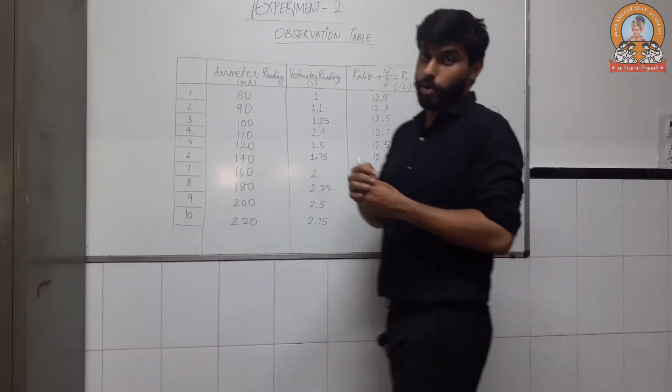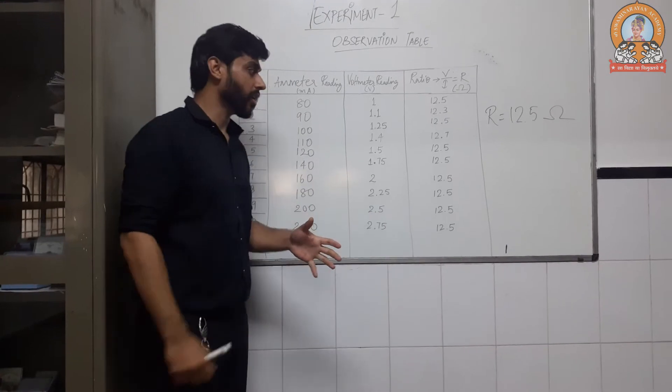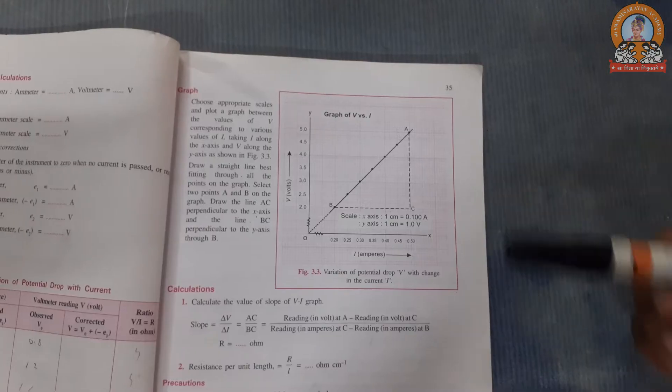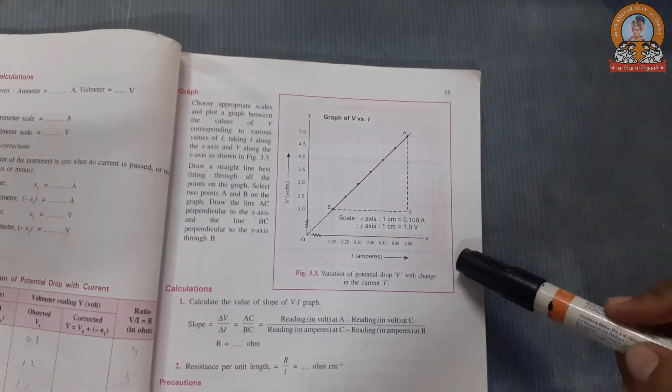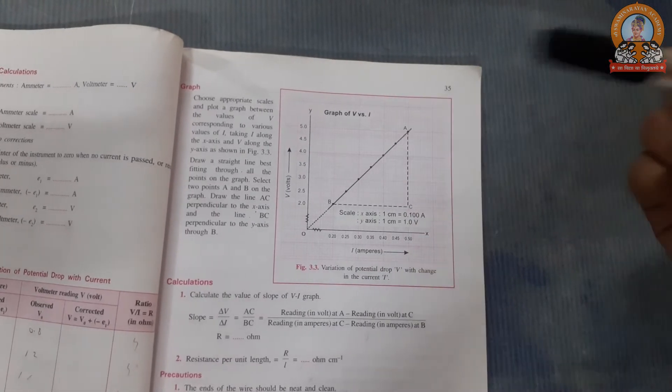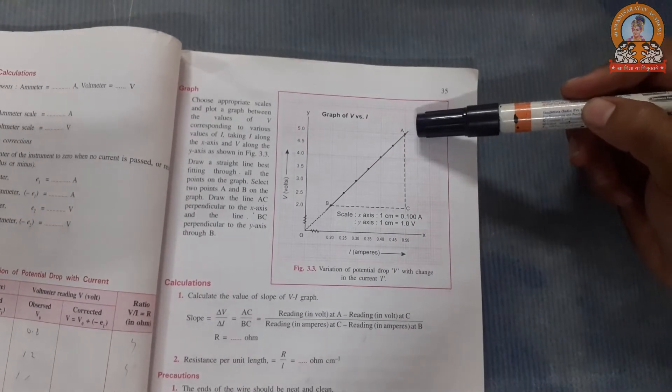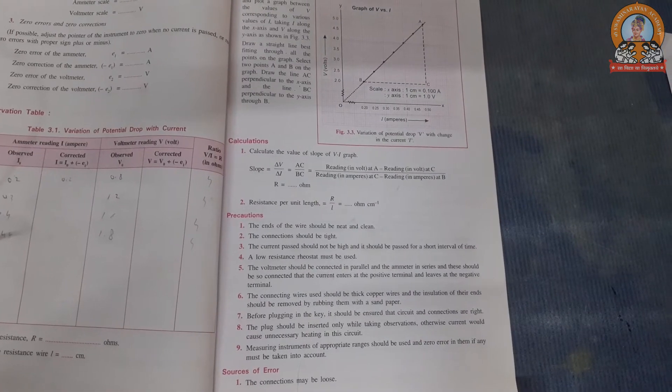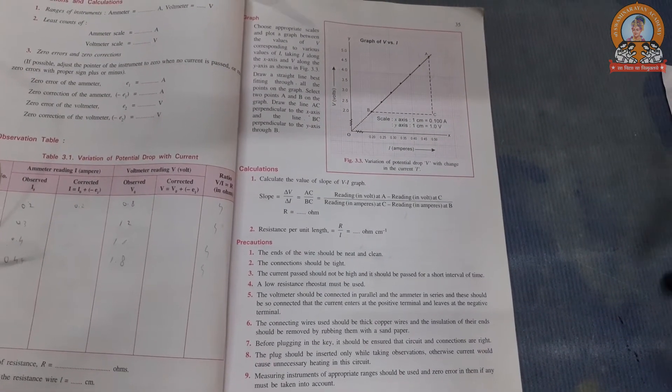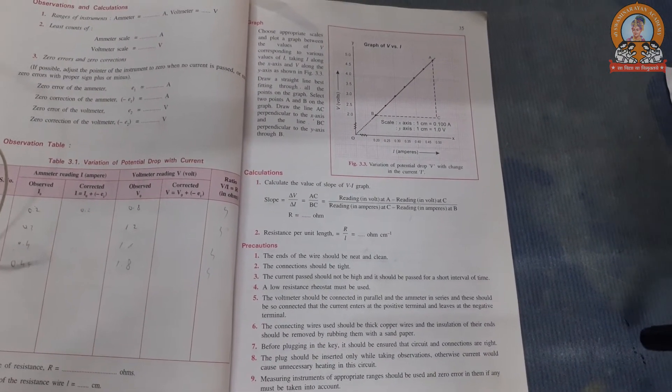Now you need to plot a graph in your journal. You have to plot a graph and stick to your journal. Your graph should look like this. There might be one or two points which won't be in the straight line, but that's fine, completely fine.